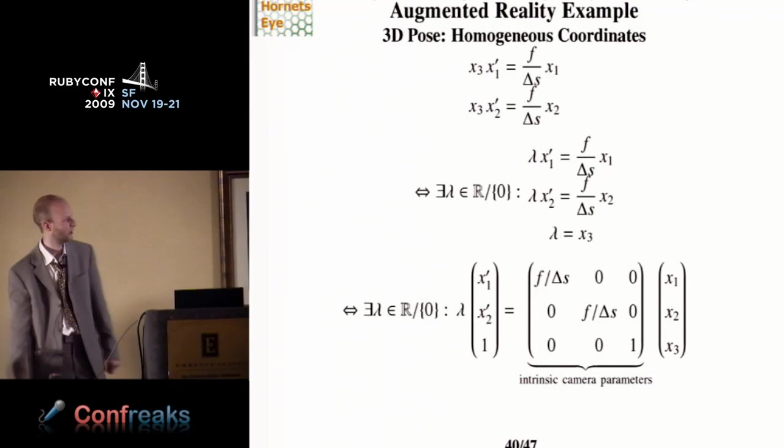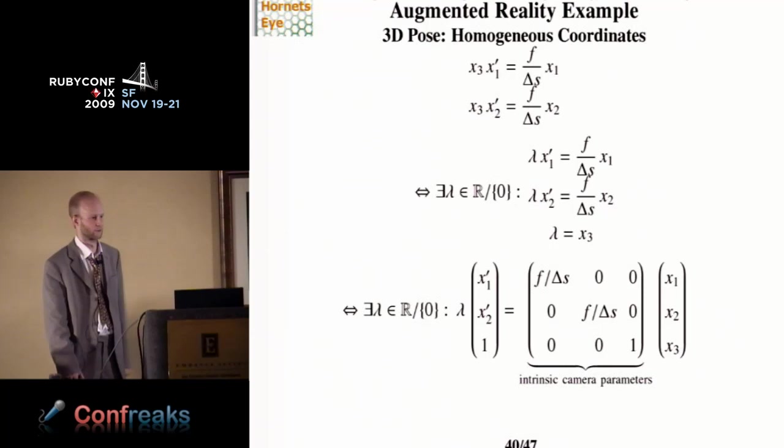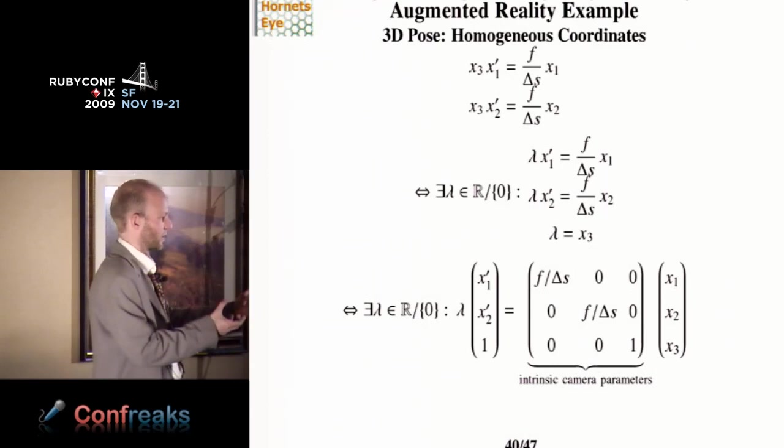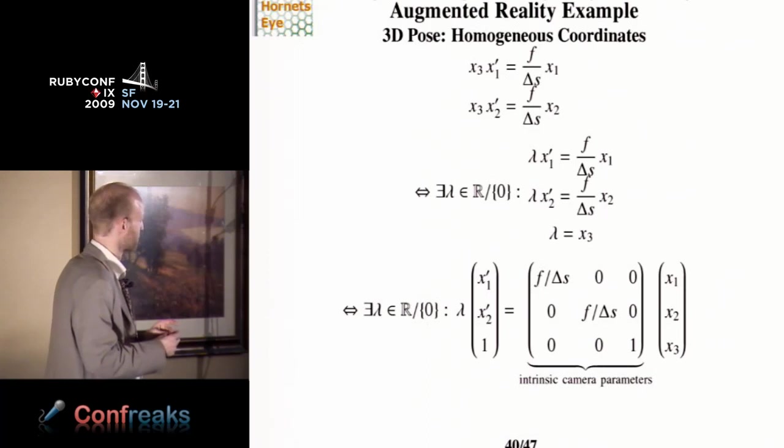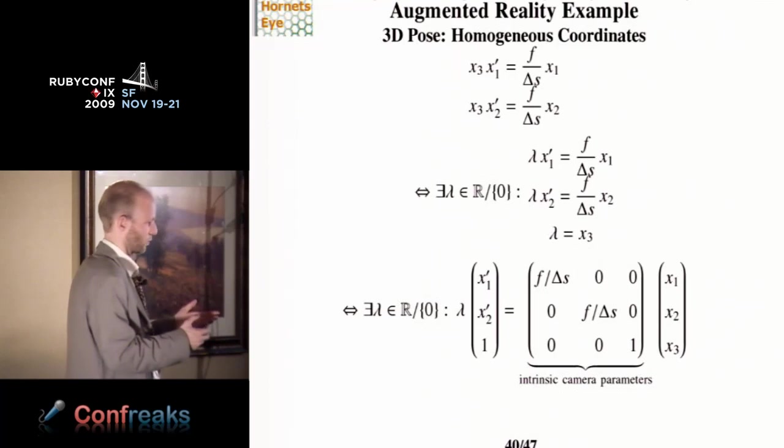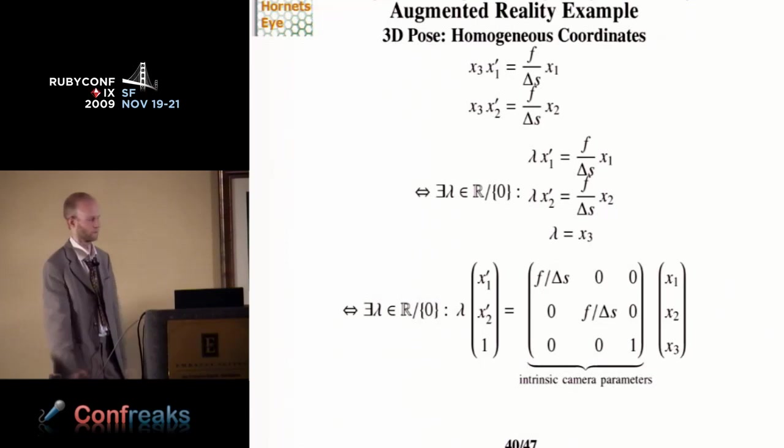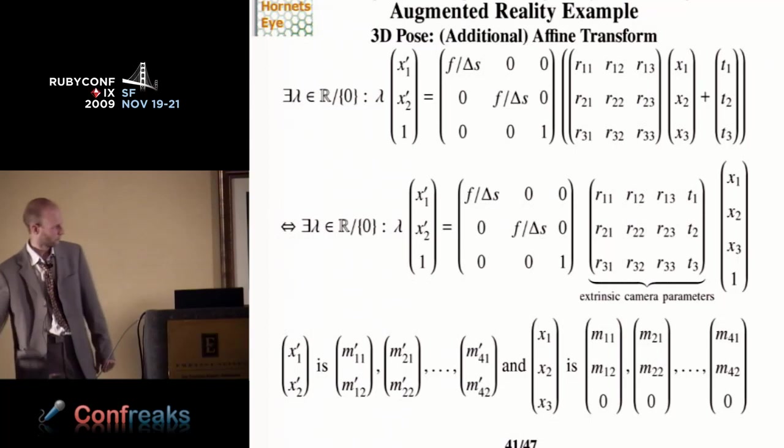Now we take these equations, these two equations, and we reformulate them a little and we introduce an additional variable lambda. And this is called homogeneous coordinates. Anybody who has done 3D graphics will be familiar with this. We just set lambda to X3 and add an additional equation that lambda has to be X3 and we require lambda to be non-zero. And the reason to do this is that this will allow us to write all these projection equations using matrix vector multiplications so it makes it more easy to handle. And this matrix is actually the intrinsic camera matrix. This will do the projection for us.